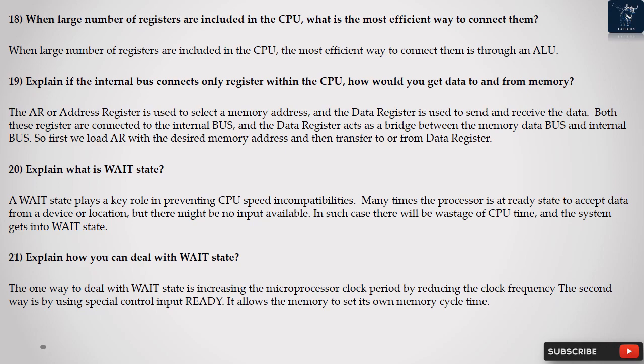Question 21: Explain how you can deal with wait state? The one way to deal with wait state is increasing the microprocessor clock period by reducing the clock frequency. The second way is by using special control input ready. It allows the memory to set its own memory cycle time.